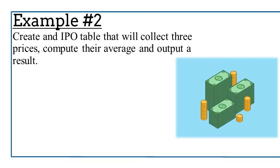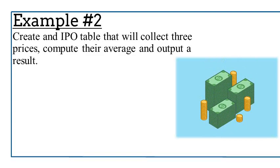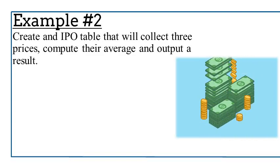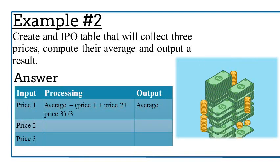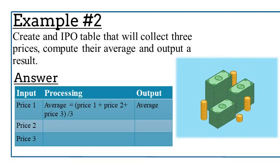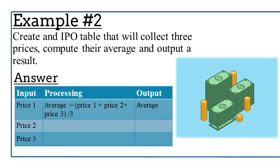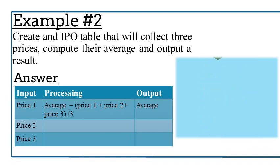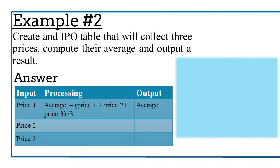Let's try another example: create an IPO table that will collect 3 prices, compute their average, and output a result. The inputs are the 3 prices. For processing, we find their average: take price 1, add price 2, add price 3, then divide the total by 3 since there are 3 prices. The output is the average.